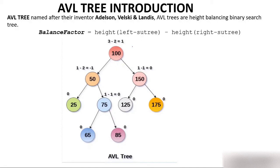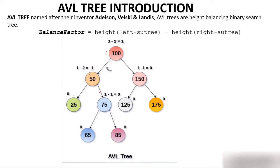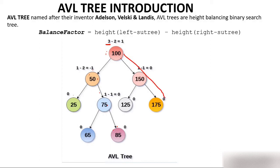Let's see how balance factor is calculated. You have a binary search tree with root 100. To calculate the balance factor of 100: consider the left subtree — going from the root to the maximum depth on the left gives height 3 (levels 0, 1, 2, 3). On the right, the maximum depth is 2. So balance factor = 3 minus 2 = 1.